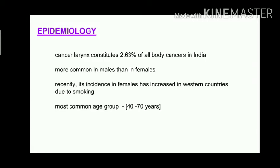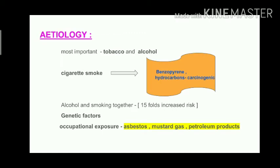The most common age group affected is 40 to 70 years. Etiologies for laryngeal carcinoma: the most important risk factors are tobacco and alcohol. Cigarette smoke contains substances like benzopyrene and hydrocarbons which are carcinogenic, leading to laryngeal carcinoma. Having both alcohol and smoking together increases the risk by 15 times. Other etiologies include genetic factors and occupational exposure like asbestos, mustard gas, and certain petroleum products.